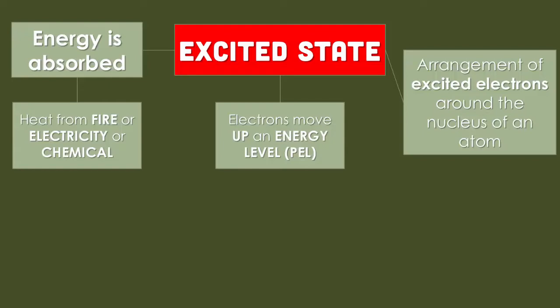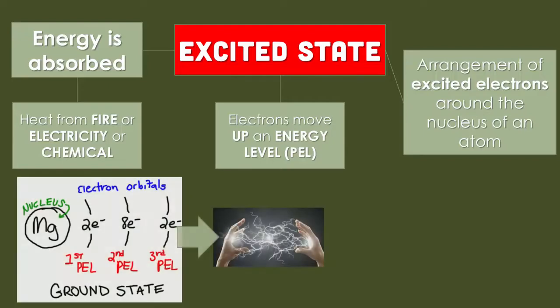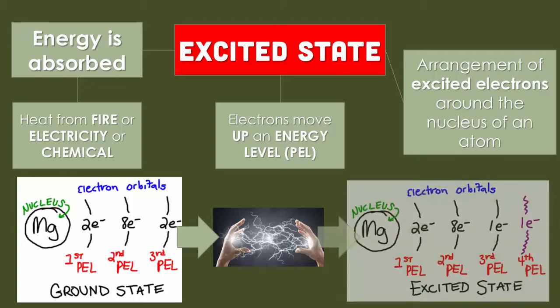And then electrons are going to move up an energy level because they're absorbing that energy. So in the bottom corner, you'll see that magnesium has popped up from the last slide. We had the ground state of 2, 8, 2. And we're saying that if an electron absorbed energy, it's going to move to an excited state, moving one of those electrons to a higher energy level.